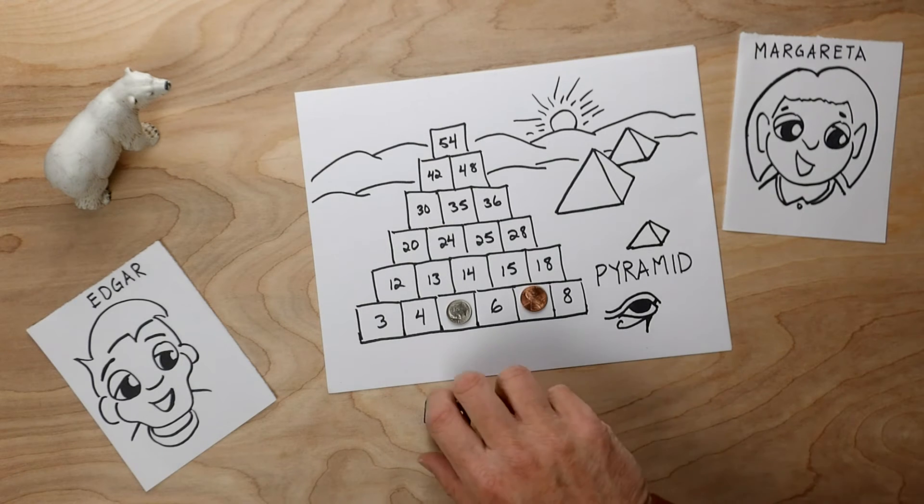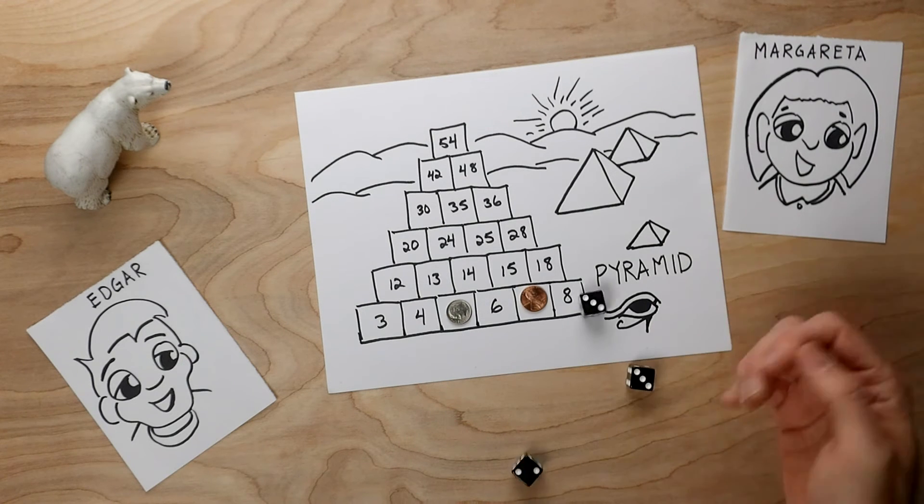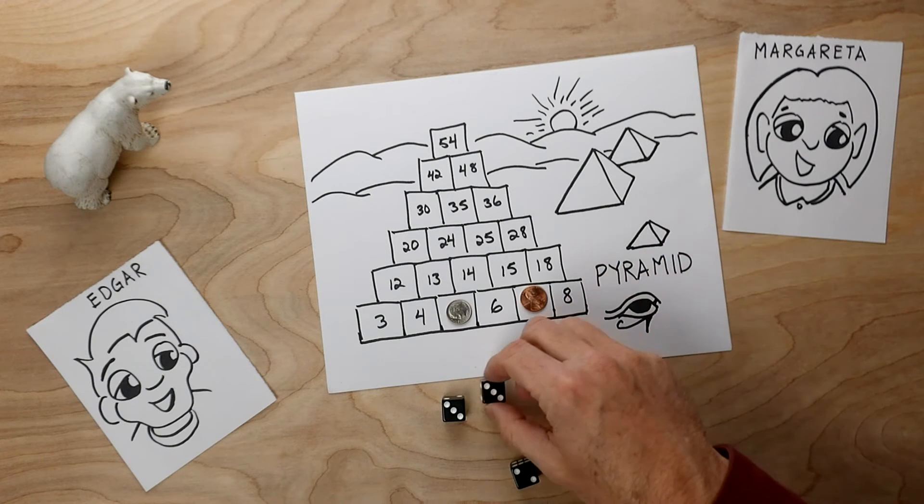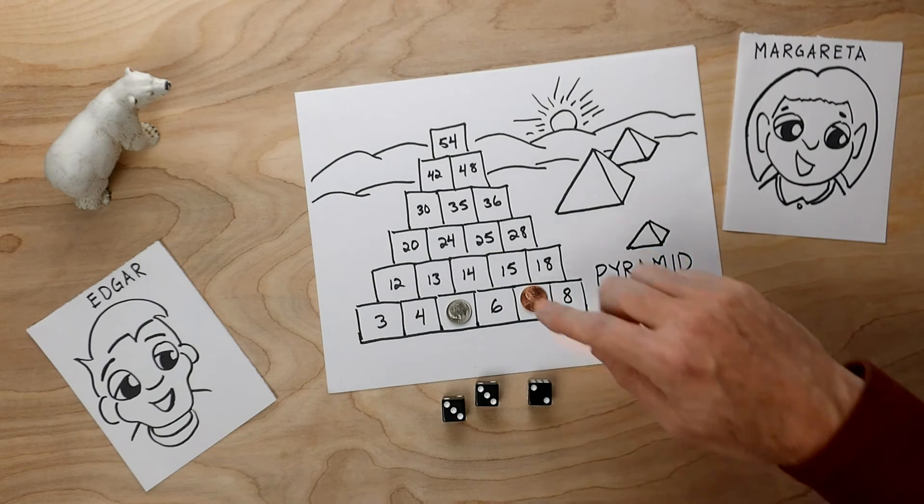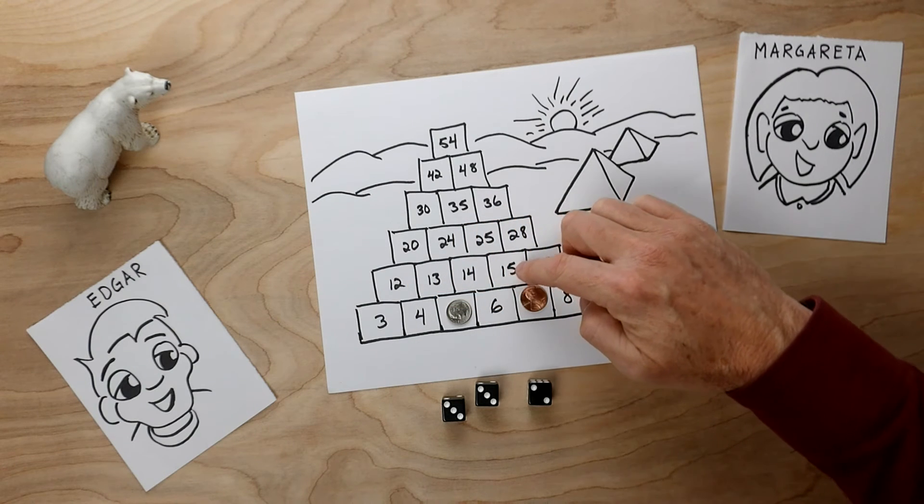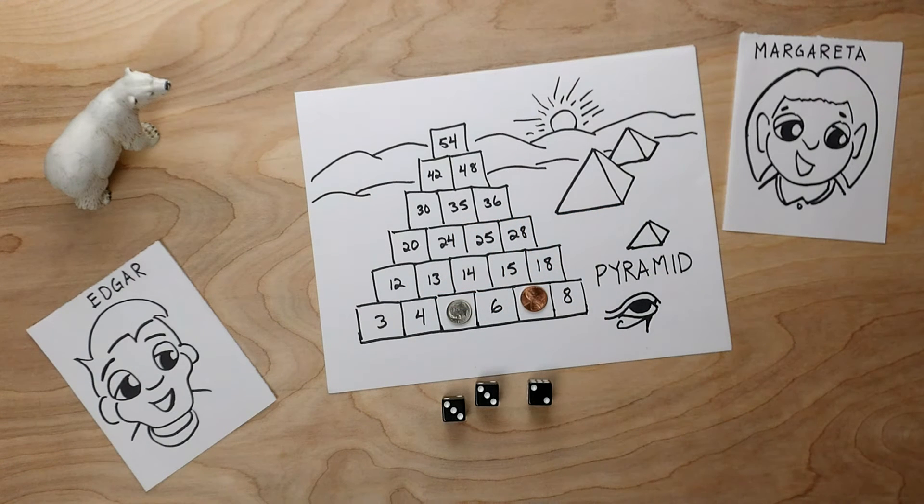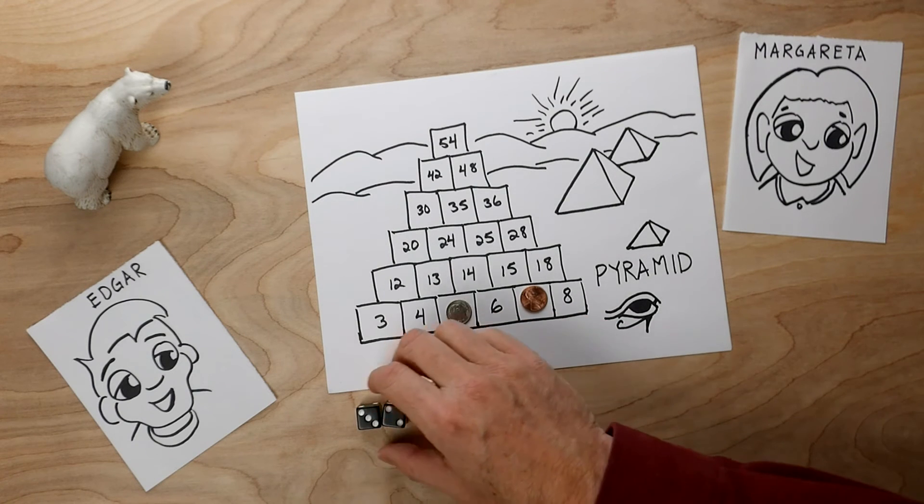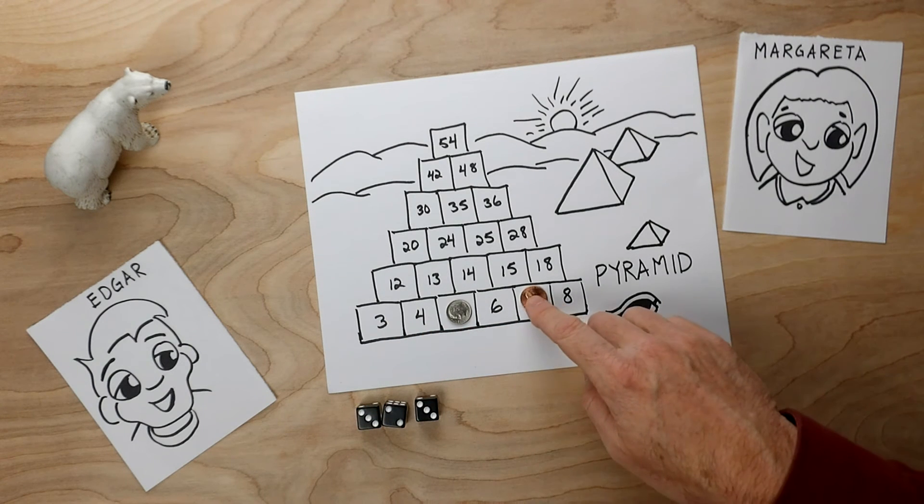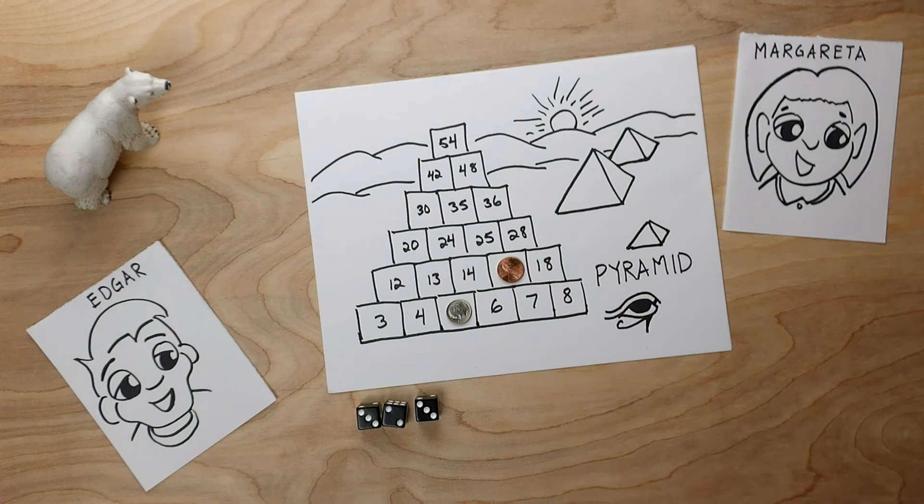It's now Edgar's turn. Edgar rolls the dice. A three, a three, and a two. And Edgar's trying to make a 12, a 13, 14, 15, or 18. Edgar's really lucky here. Two plus three is five, and five times three makes 15. So Edgar goes up to the next level of the pyramid.